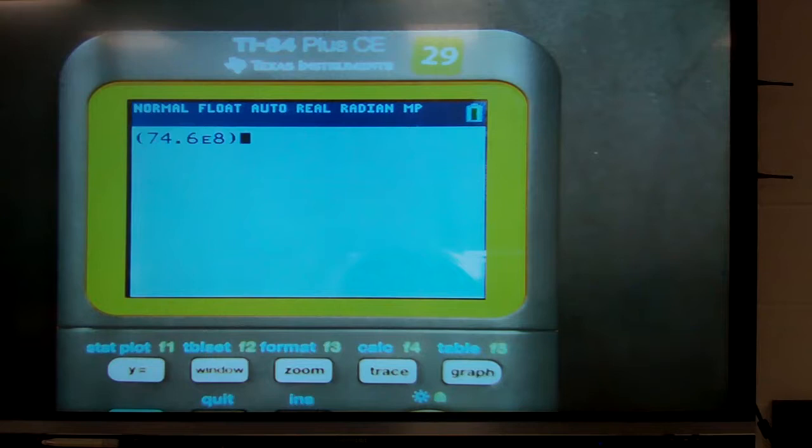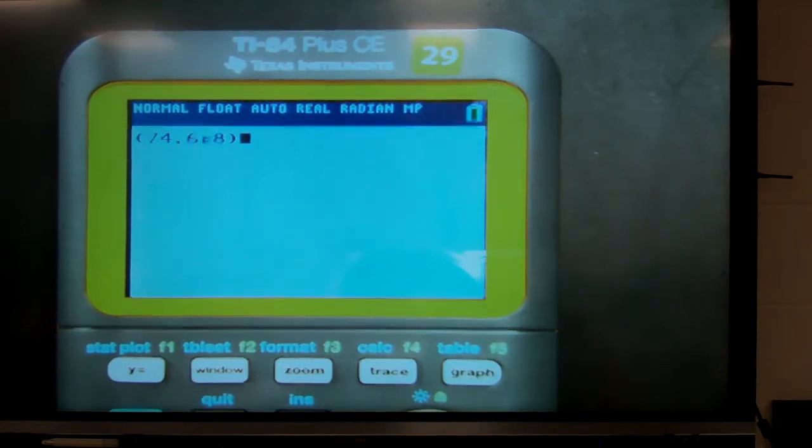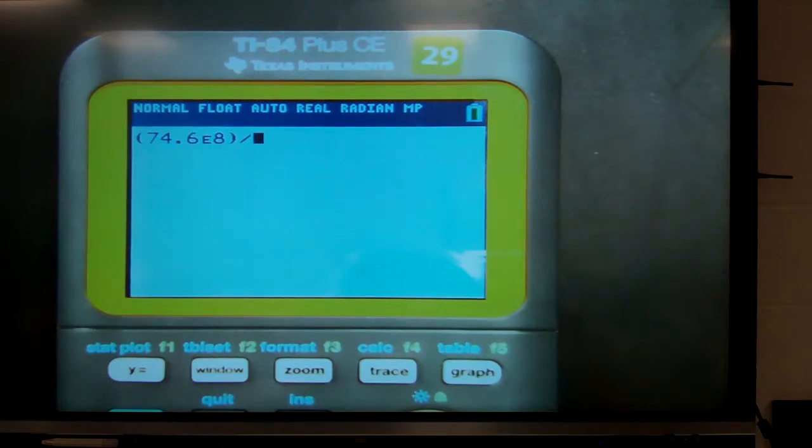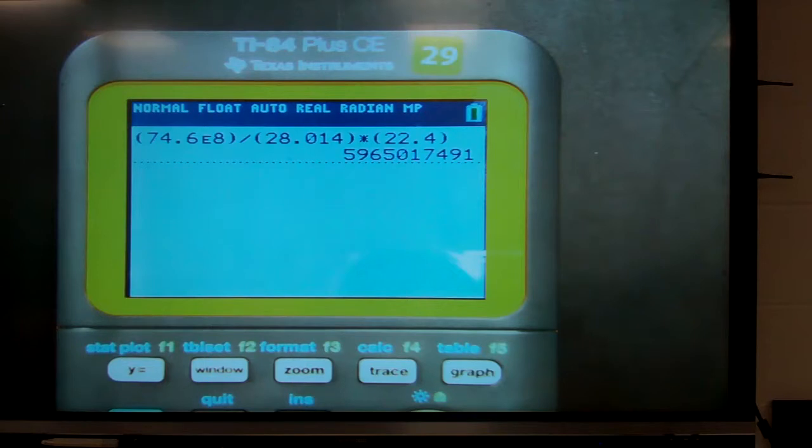So, then you type the exponent. So, that is 74.6 times 10 to the 8th. That's how the calculator is reading that. Then, in parenthesis. Then, from here, my number is in the numerator. This is why we always set it over 1. I look in terms off that. The second number I come to. Is it in the numerator or denominator? Denominator. So, it's in the opposite side. So, I divide. Parenthesis. Put the number in. 28.014 in parenthesis. Then, the next number. The 22.4. Is it in the numerator or denominator? Numerator. Numerator is of the same size. So, we're going to multiply when 2.4. In parenthesis. That's what I get.